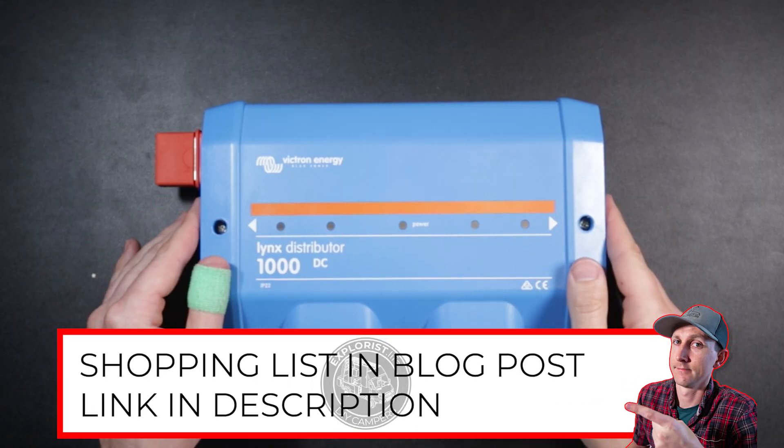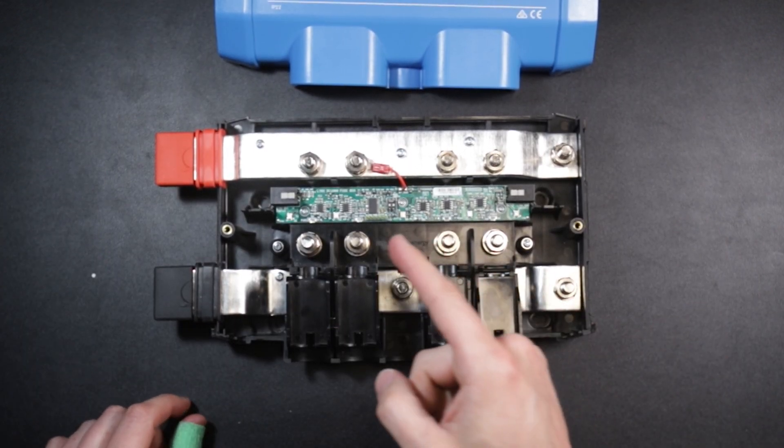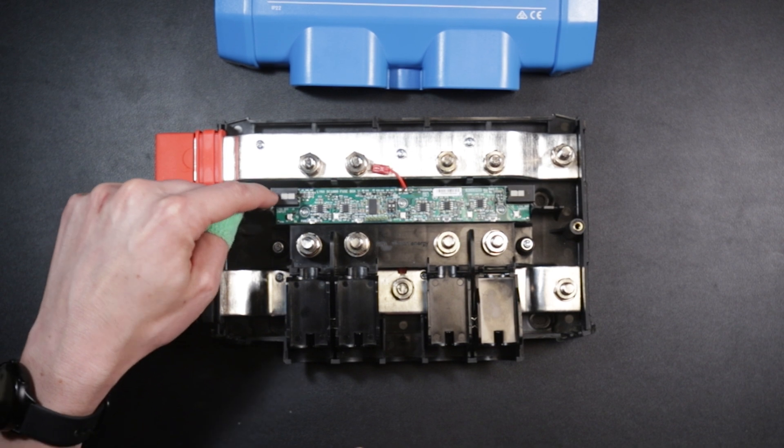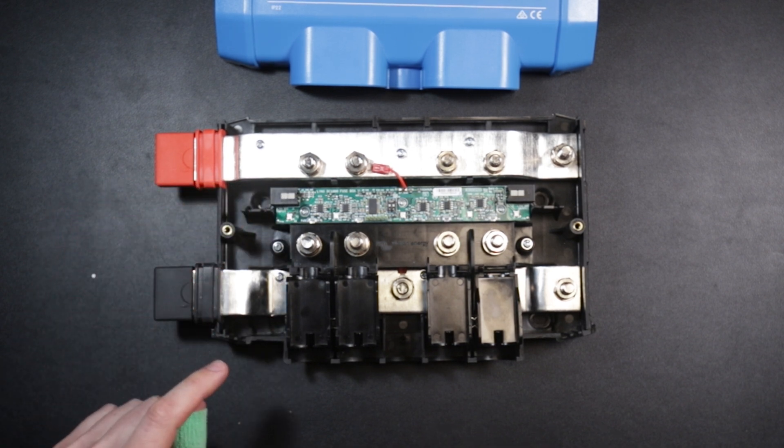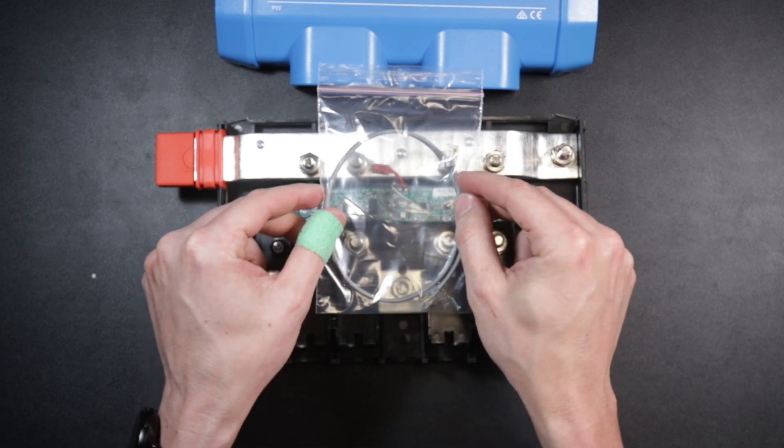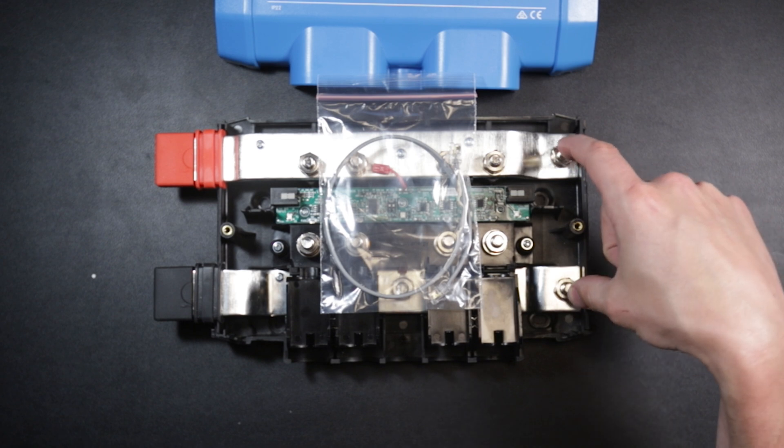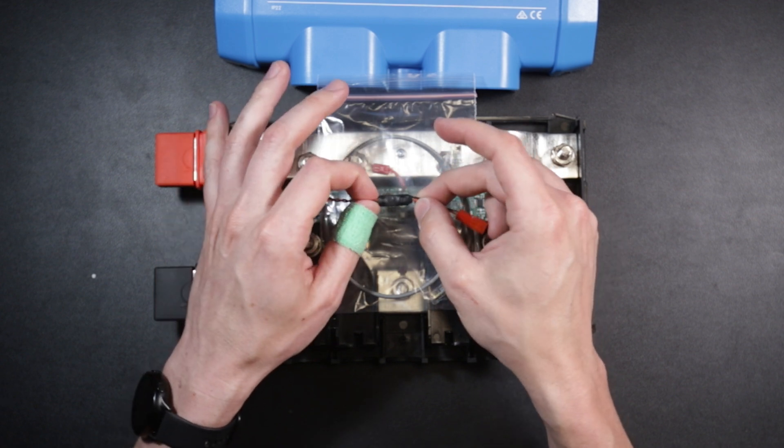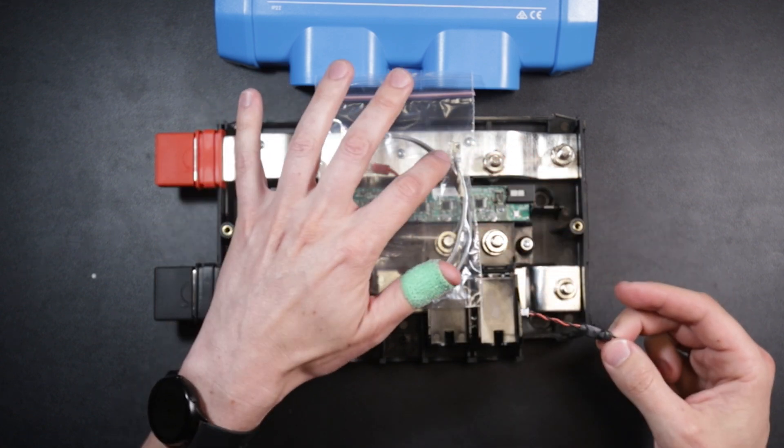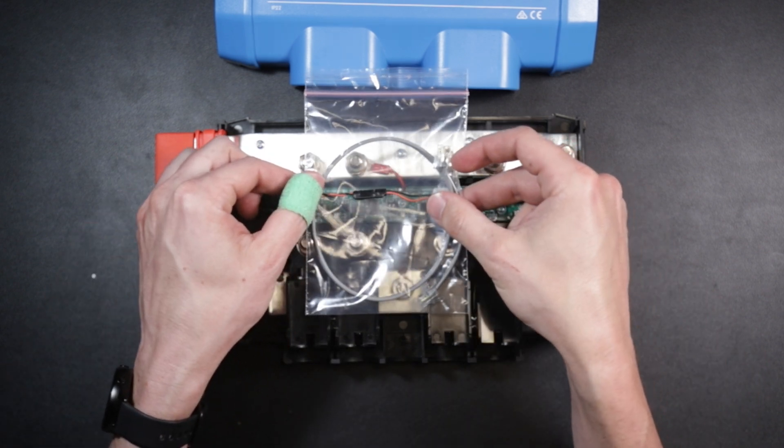Here is the plan. We need to deliver 5 volt power into this port right here. We're going to do that by cannibalizing the cable that came with the Lynx distributor and converting 12 volt power from the positive and negative bus bars down through this 12 volt to 5 volt converter through this cable into that port.